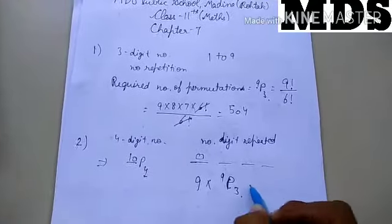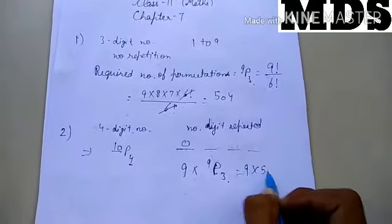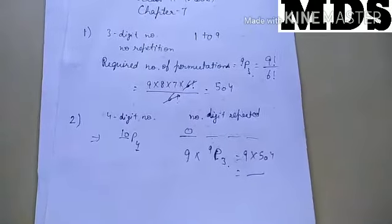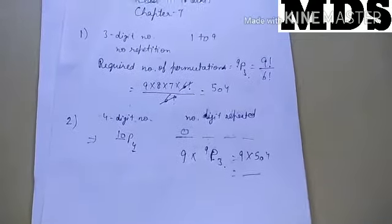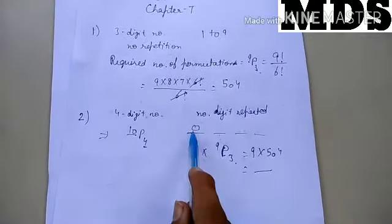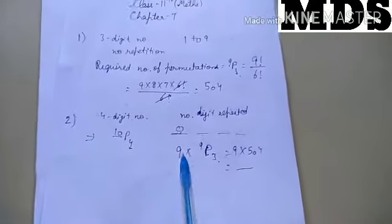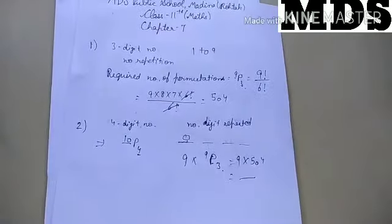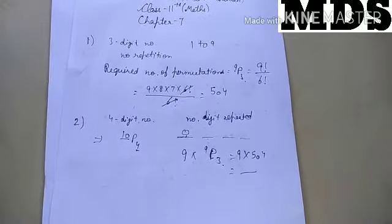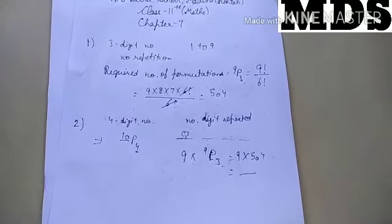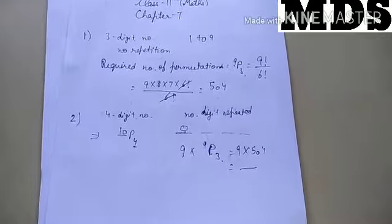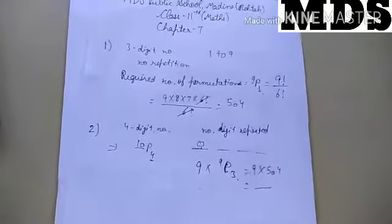So it will be 9 × 9P3, which is 9 × 504. The basic point is that we do not require a 0 at the thousands place, so everything else remains the same.